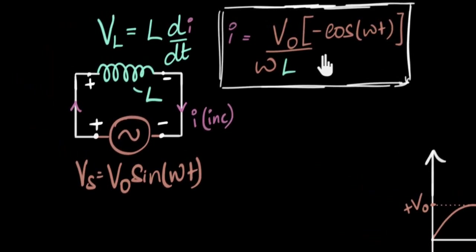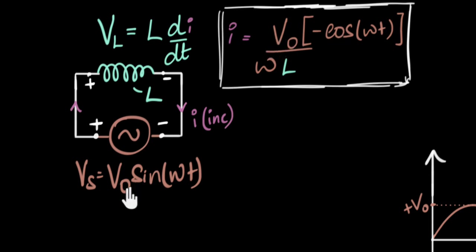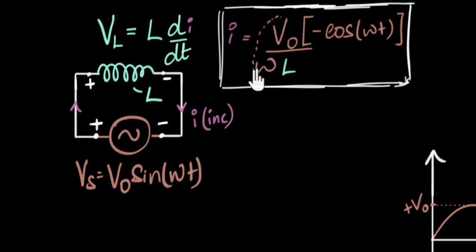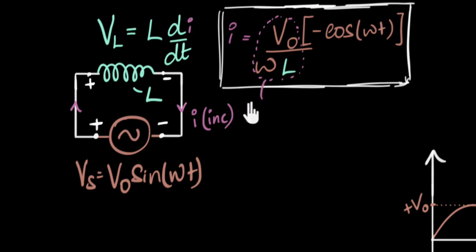So where do we start? We can start by trying to find the relationship between the current and the voltage. For that, let's try to put the current in the same format as the voltage. The first thing I immediately see is that this part represents the maximum current, which we can call I naught, just like how we call this V naught.